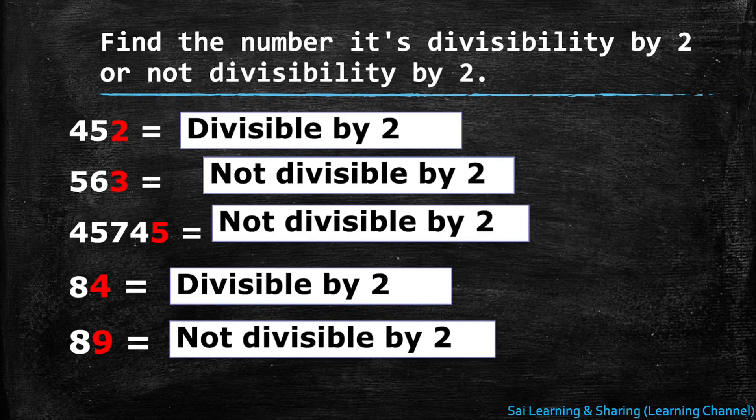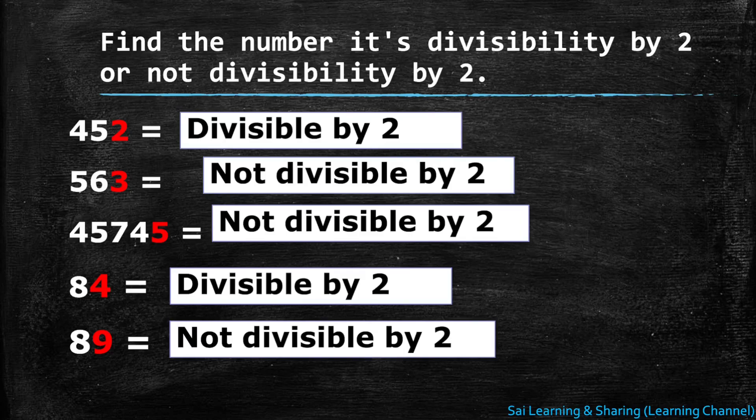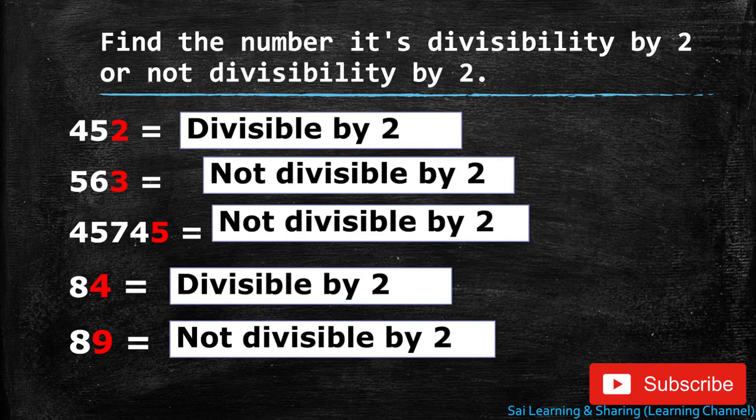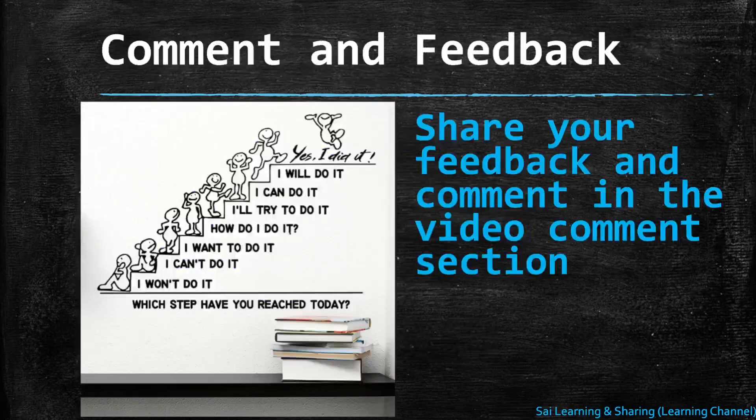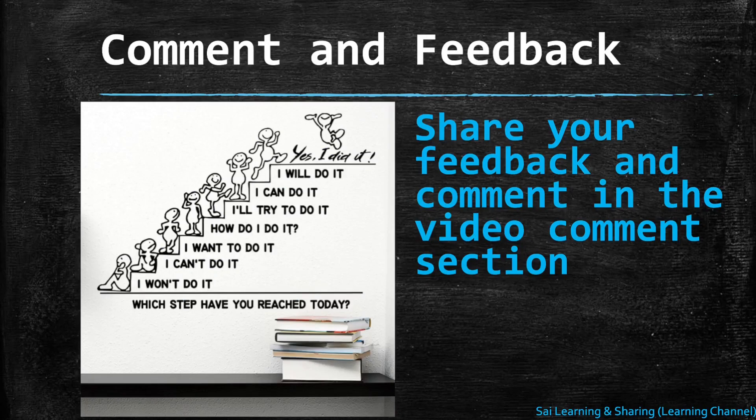Next, 89 - in the one's place it is written 9, and hence 9 is not an even number, it is not divisible by two. That's it for today's video. Please share your feedback and comment in the video comment section.